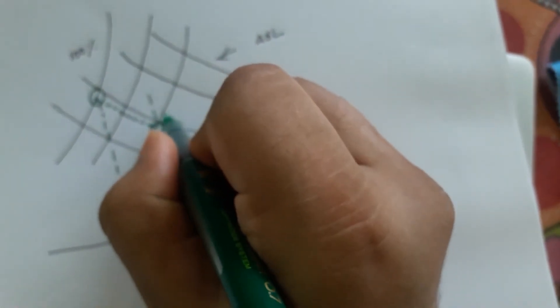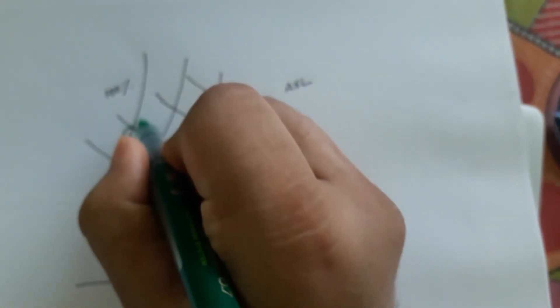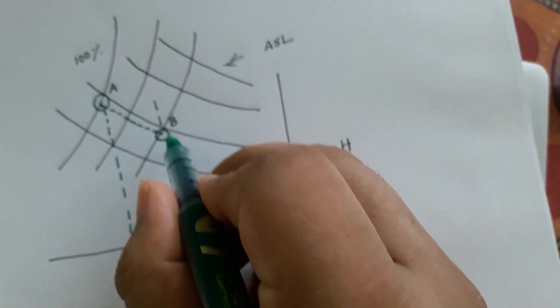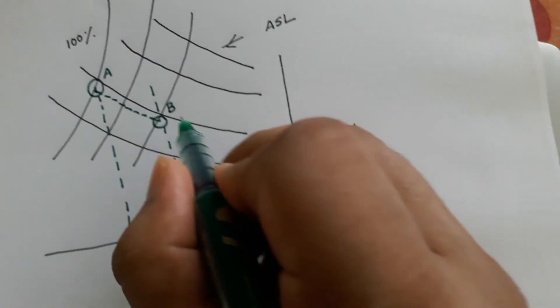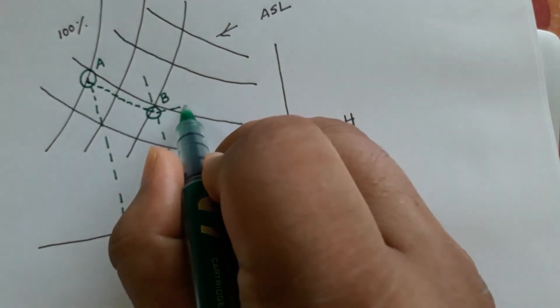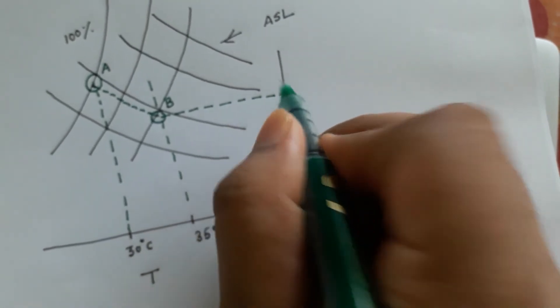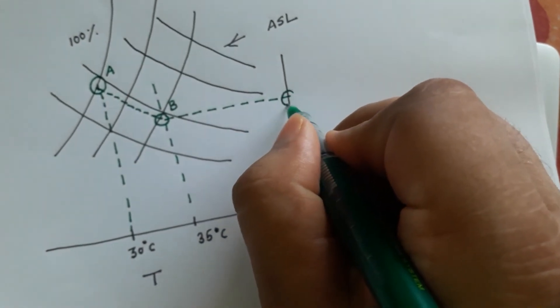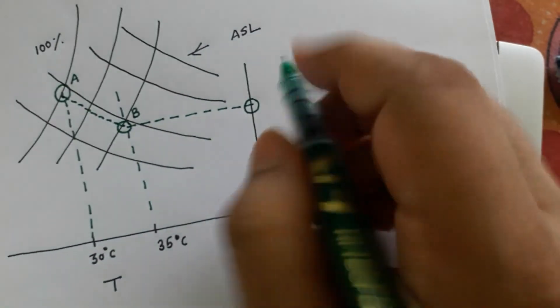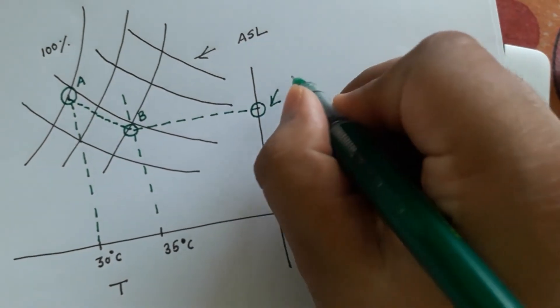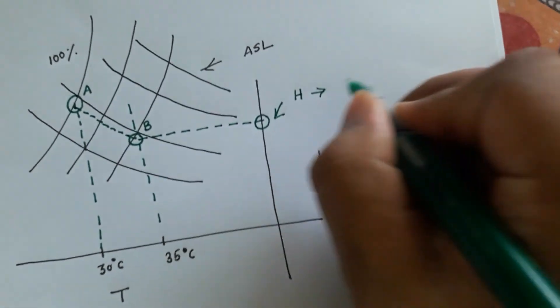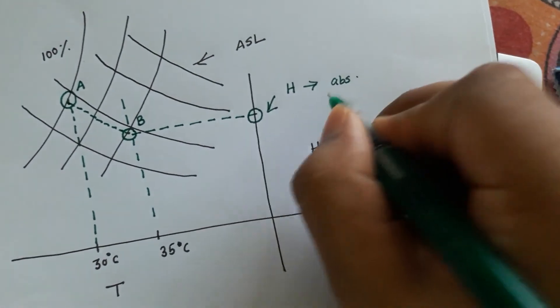That point of intersection, let us mark it as B. This is A. Once you find point B, you draw a horizontal line towards the Y axis and it will intersect the absolute humidity line. And this point H basically is your absolute humidity.